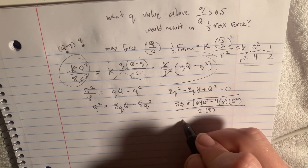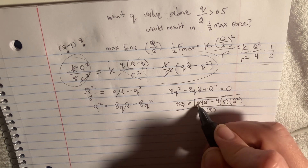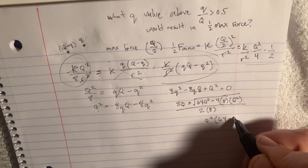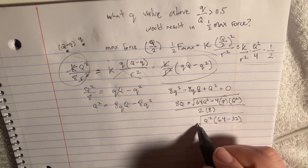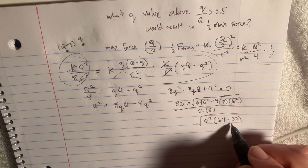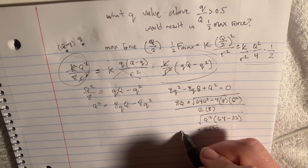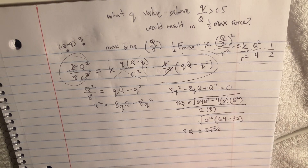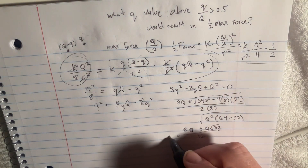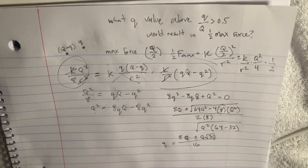Pulling the Q's out from under the square root: inside we have Q² times (64 minus 32), so the square root simplifies to Q times the square root of 32. That gives us (8Q plus or minus Q√32) divided by 16, which equals q.